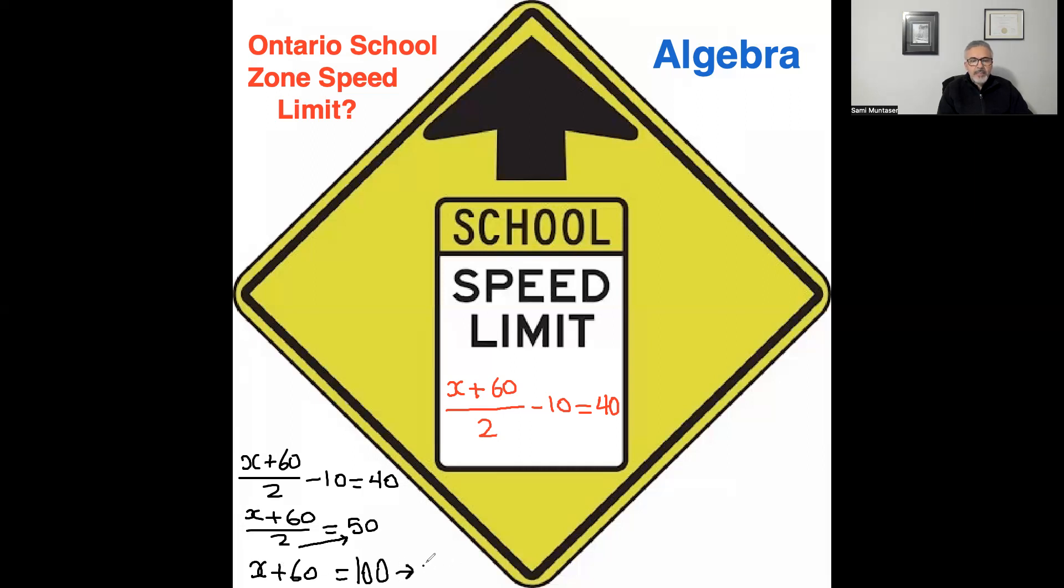Now we just move the 60 to the other side, it becomes minus 60, so 100 minus 60 gives you x equals 40. So that's one way of solving this equation.